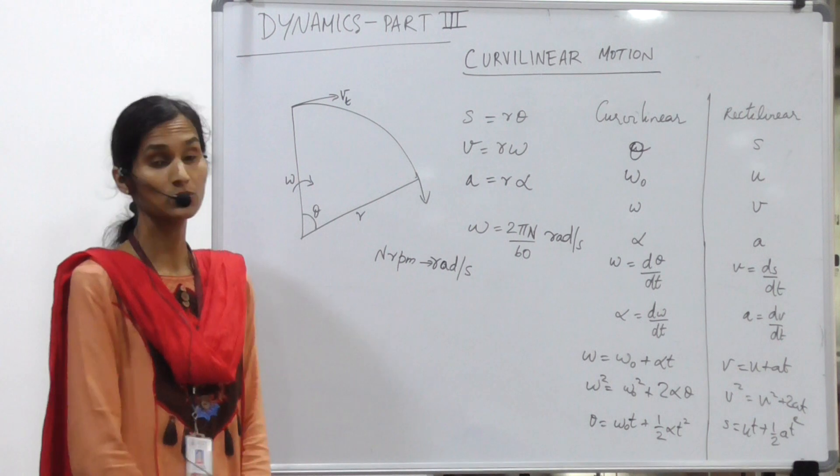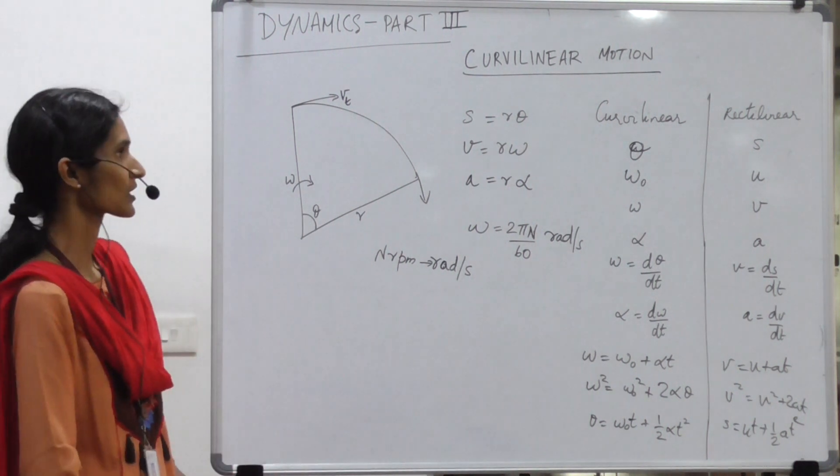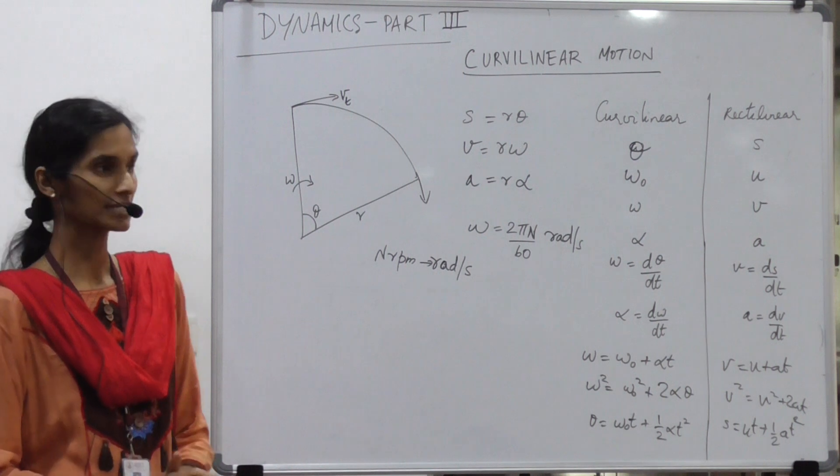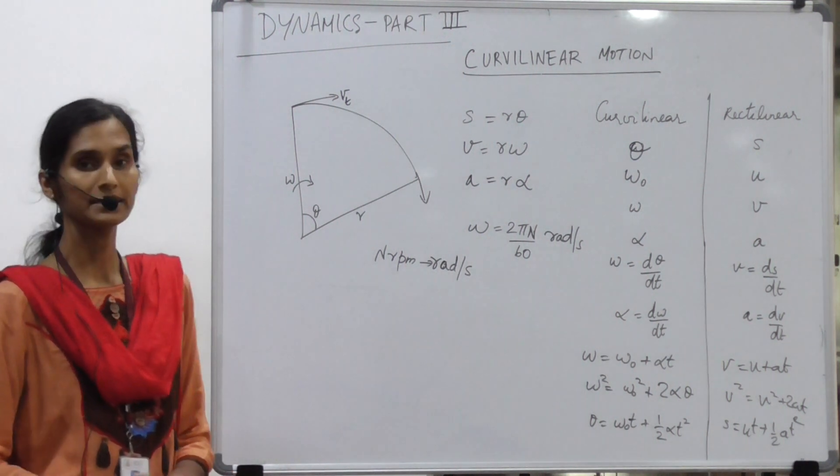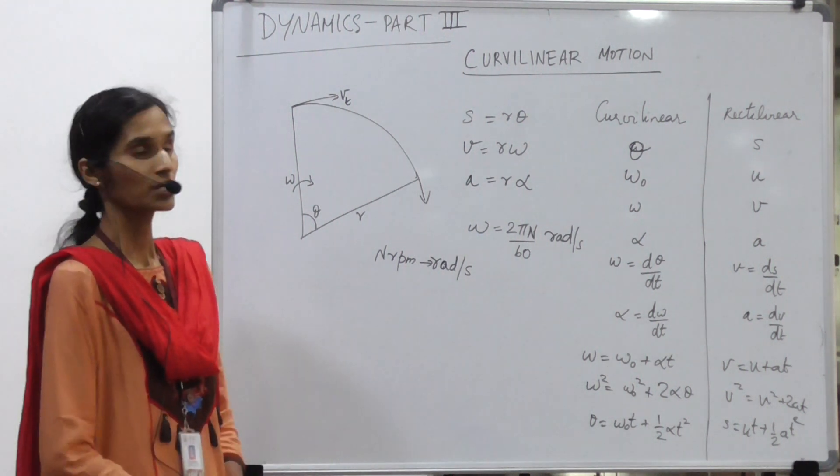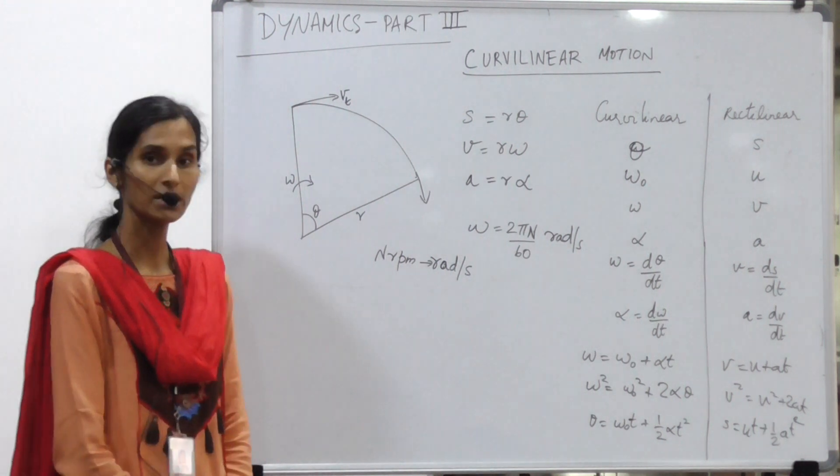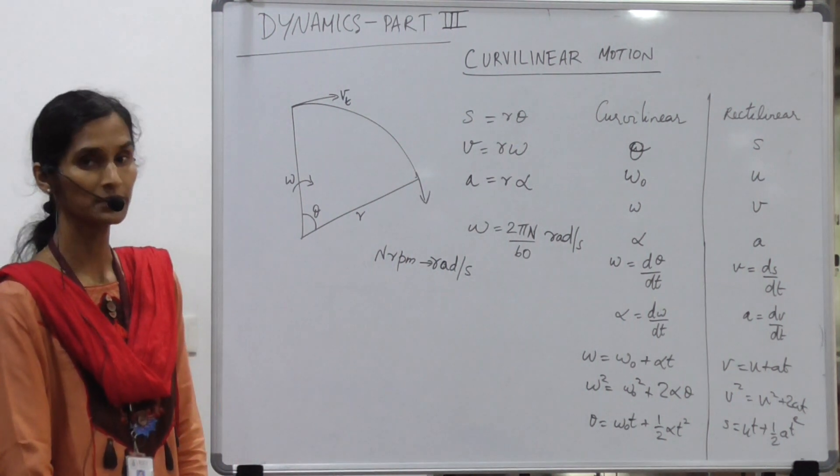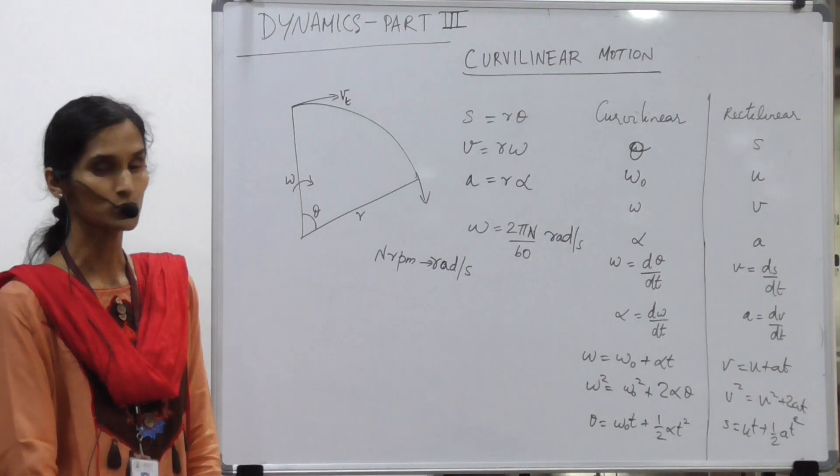Now in this part we will be looking at curvilinear motion. In rectilinear motion, the kinetics and kinematics involve motion in a straight line. Curvilinear motion is when the path traversed by the object is a curved line.